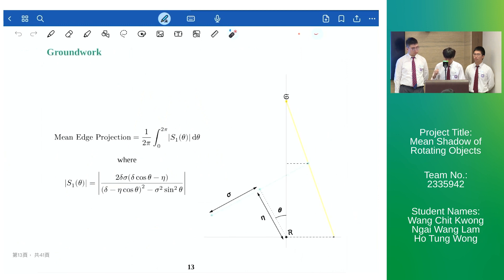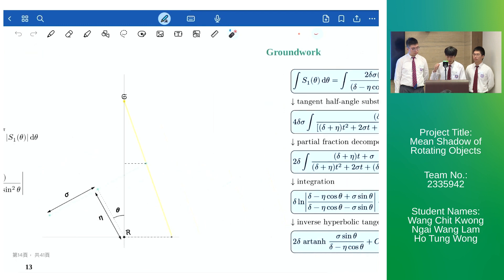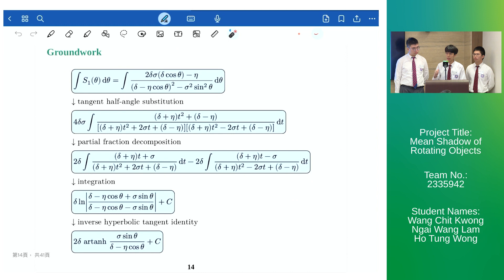Let us define the single edge as follows. We let its vertical displacement be eta and half length sigma while theta shall represent the angle of rotation in anti-clockwise direction. By solving for the end points of the projection we have the length of the edge projection given by the absolute value of s1 theta. To calculate the anti-derivative of s1 theta we first utilize tangent half angle substitution followed by partial fraction decomposition and the use of the arc hyperbolic tangent identity which gives the following result.